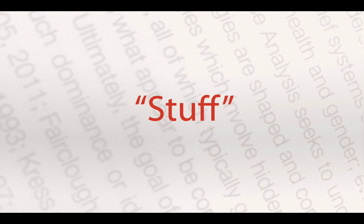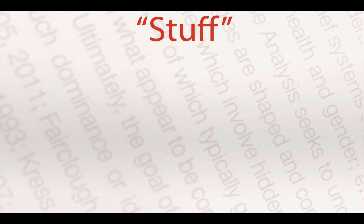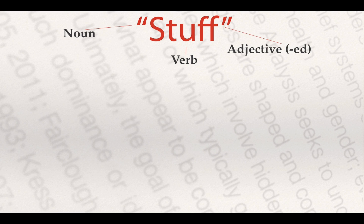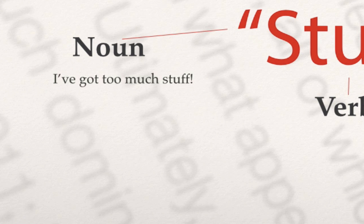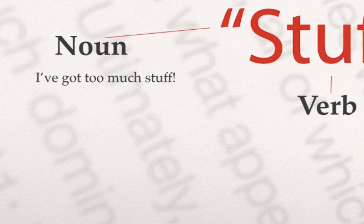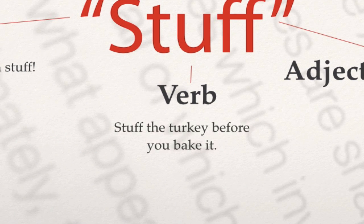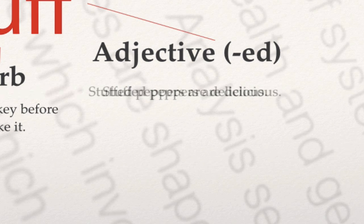If you take a look at 'stuff' and all the different meanings it can have — it can be a noun, a verb, or an adjective when we just add the affix '-ed.' So as a noun: 'I've got too much stuff' — the notion of stuff meaning possessions. Or a verb form like 'stuff the turkey before you bake it' — you're actually shoving something into something else. Or as an adjective: 'stuffed peppers' — the peppers have had something shoved into them.